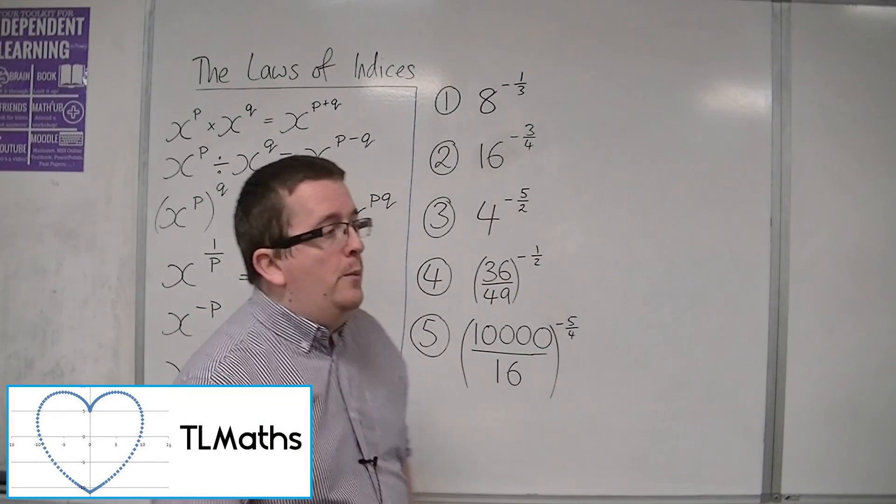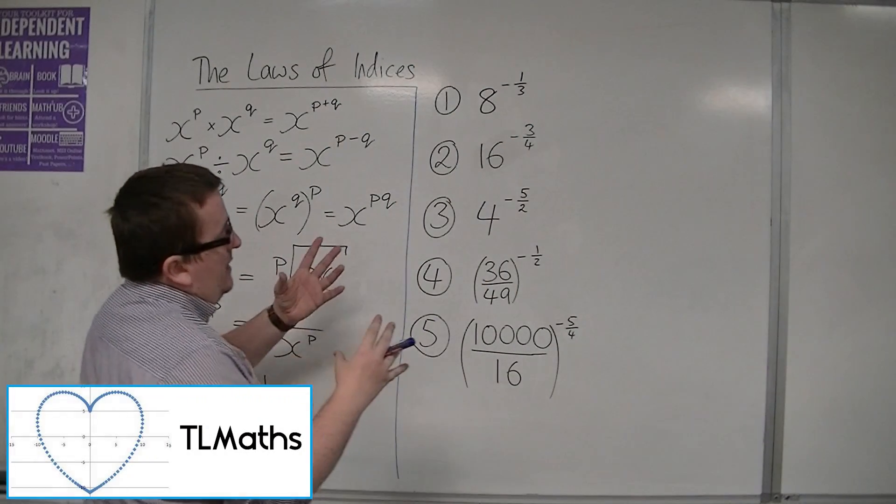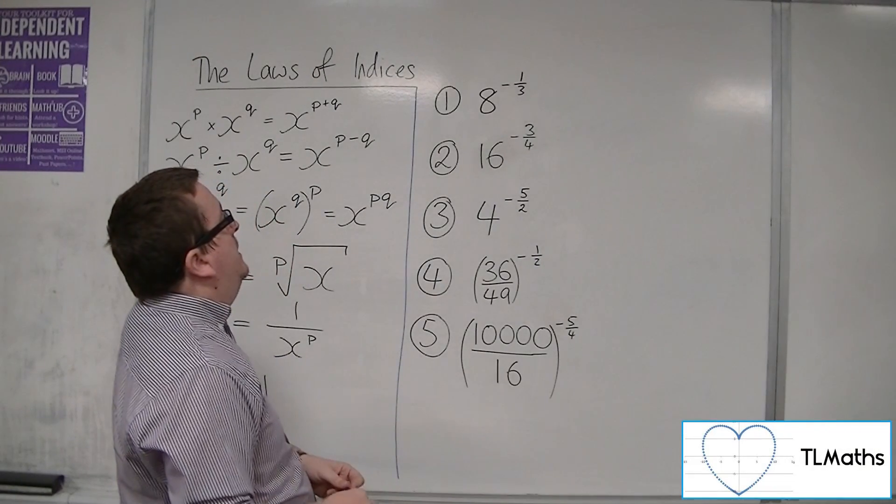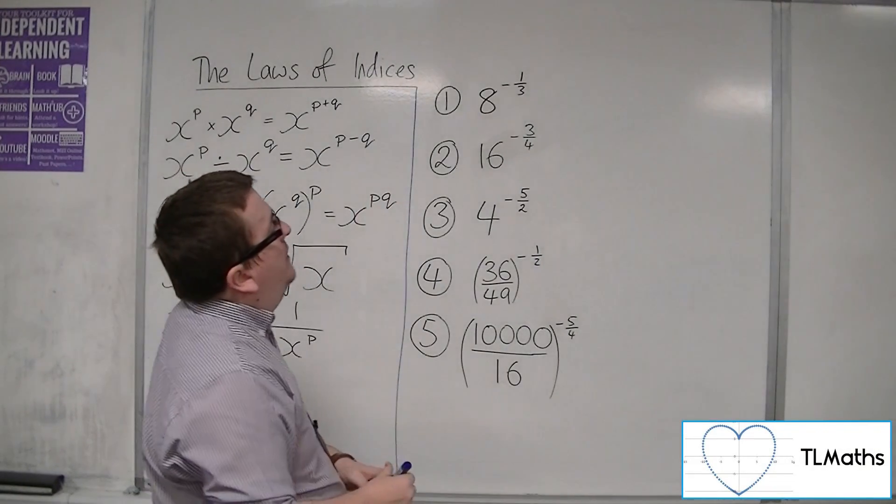So let's look at some examples where we've now got negative fractional indices, negative rational indices here. So we've got 8 to the minus 1 third.